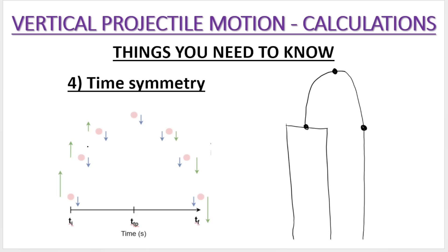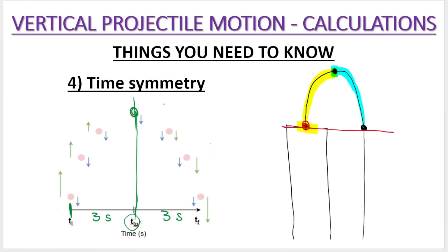Time symmetry is another important concept that will be very helpful in calculations. The time it takes an object from release to its maximum height equals the time to travel back down to the same level. For example, if it takes three seconds to reach the turning point, it'll take three seconds to return to the same level. Applied to an object thrown from a building: if it takes two seconds to go from the building top to maximum height, it takes two seconds to return to the same level as the top of the building. That's time symmetry.